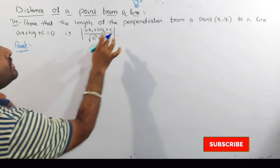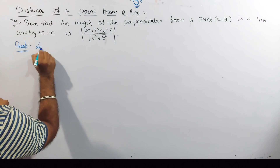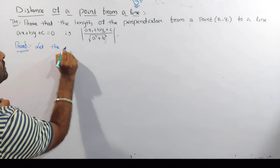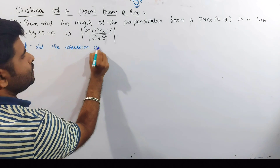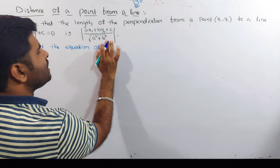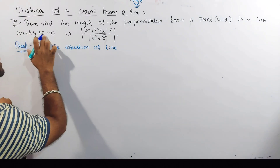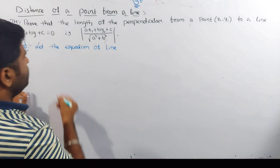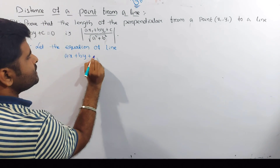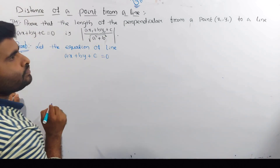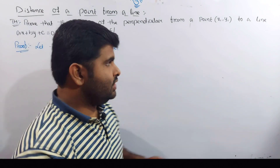Let's start with the proof. First we have an equation of line: ax plus by plus c equal to 0. And we have a point x1, y1.